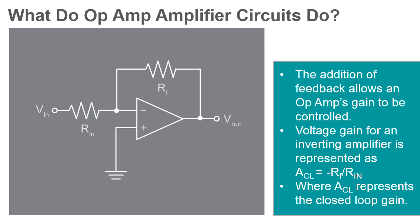If the input voltage is 0.1 volt, then the output voltage will be negative 1 volt. The gain of the amplifier can now be predictably controlled by manipulating these resistor values.